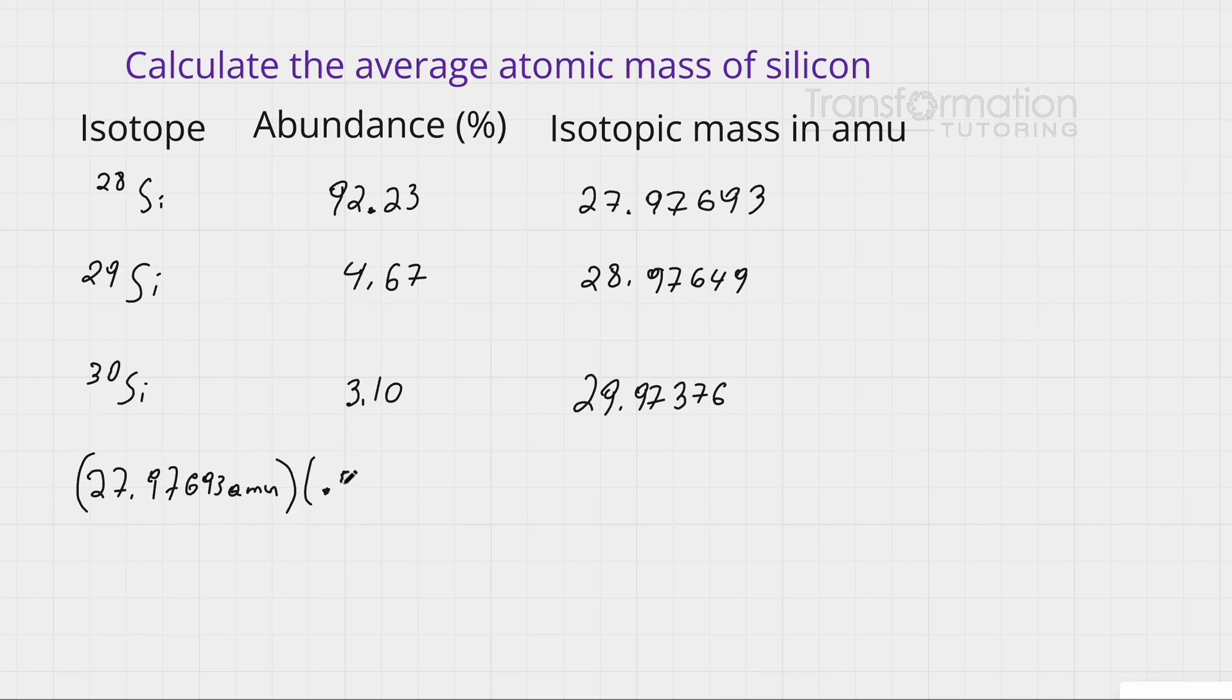Now I will do the same thing for the second isotope. I take the mass, 28.97649 amu, and multiply by percent abundance. Again, I bring it two decimal places to the left, so 0.0467.